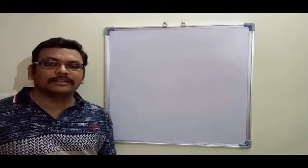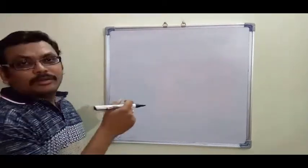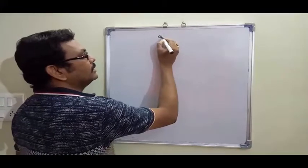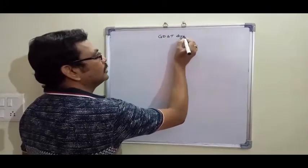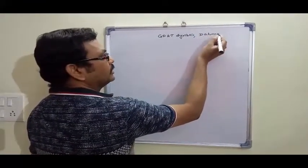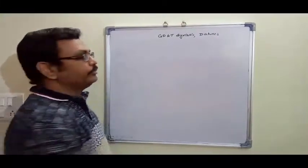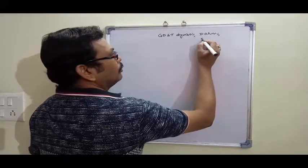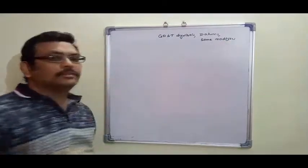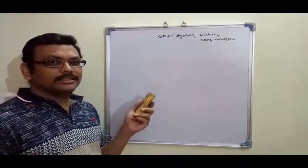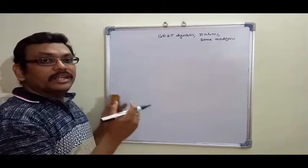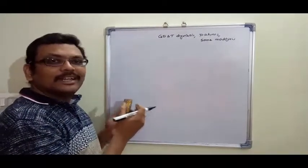Hi guys, welcome back. In this section we'll see a brief description about GD&T symbols, datums, and some modifiers. Till now we have seen about GD&T tolerances and dimensions, and in this section we'll see a brief explanation of what is the use of these symbols which are generally used in manufacturing.